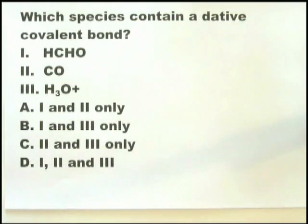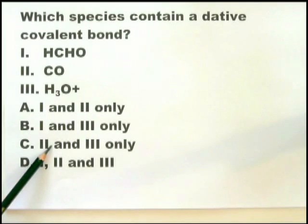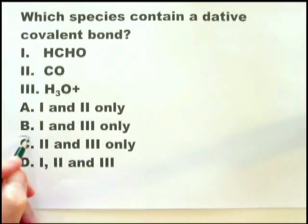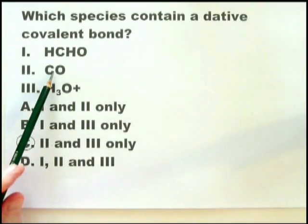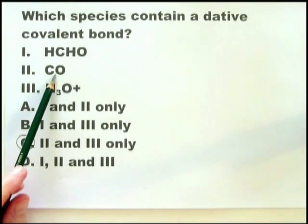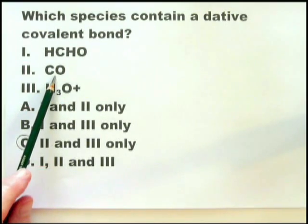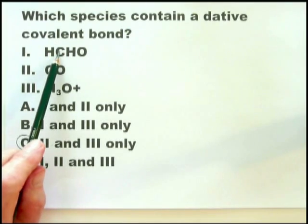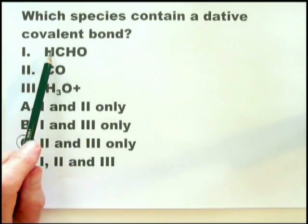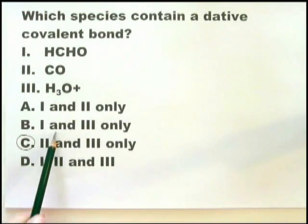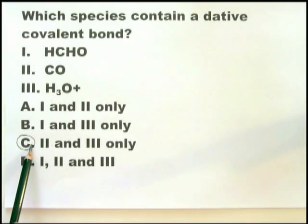As soon as you look at this question, you must know that carbon monoxide and H₃O⁺ contain dative covalent bonds, so you're looking at options 2 and 3. Now if you weren't too sure about the carbon monoxide — because that is an unusual structure — you should at least know that option 1 does not contain dative covalent bonds. So if 1 does not contain a dative covalent bond, then any answer including 1 is wrong, and you're back to C as the correct answer.